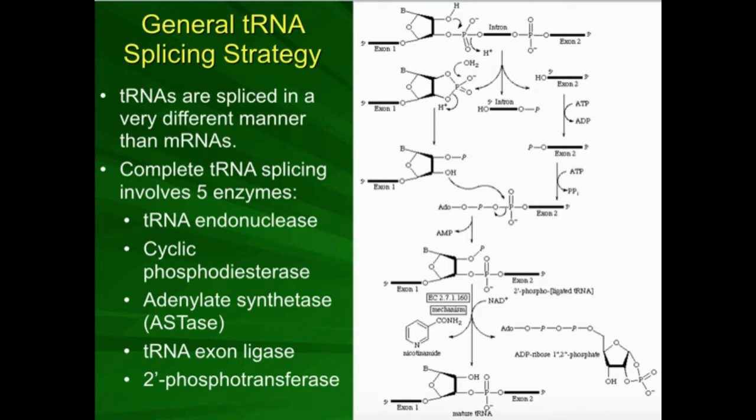We're going to see that it's fairly complicated, and it's actually going to require five different enzymes. These are the main enzymes involved. In order, they're going to be a tRNA endonuclease, cyclic phosphodiesterase, adenylate synthetase, an exon ligase, and a 2' phosphotransferase. This right here is the general scheme, and we're going to go into each individual step and talk about it as it relates to this picture.